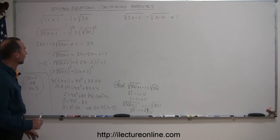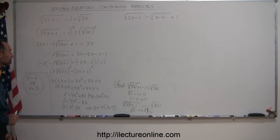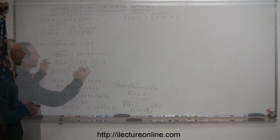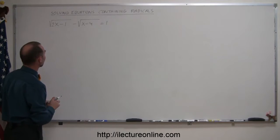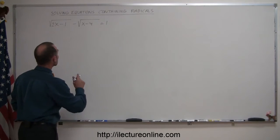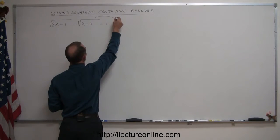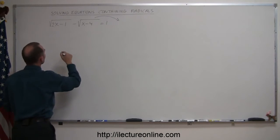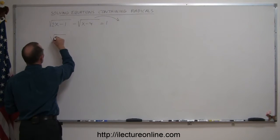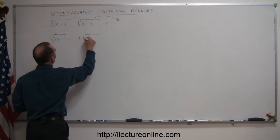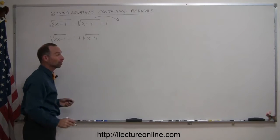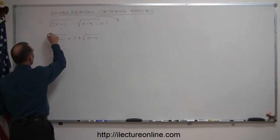Both answers are valid, giving the two solutions to this equation. Now, one more example. I've separated this one from the previous example because I was running out of board space. The technique is to move one of the radicals to the other side so you can square both sides and begin eliminating the radicals. We have the square root of 2x minus 1 equals 1 plus the square root of x minus 4.